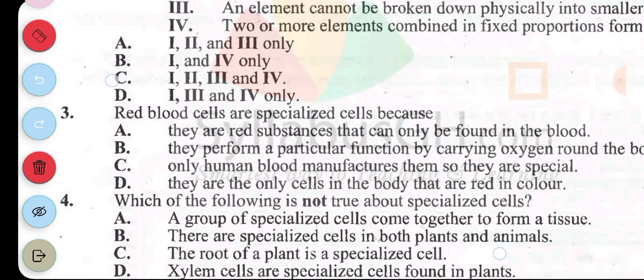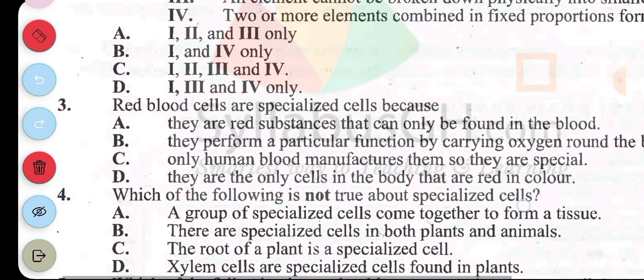Question 4: which of the following is not true about specialized cells? A, a group of specialized cells come together to form a tissue. B, there are specialized cells in both plants and animals. C, the root of a plant is a specialized cell. D, the xylem cells are specialized cells found in plants. Which is not true? It's C. The root of a plant is a specialized cell. The root is not a specialized cell.